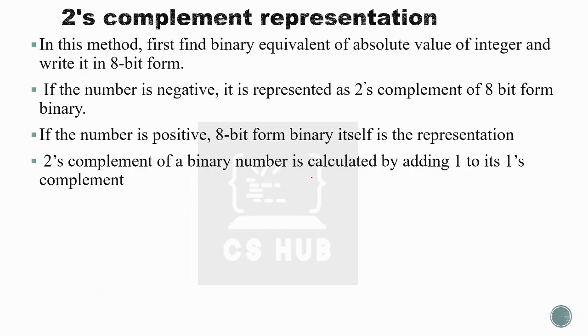So: two's complement equals one's complement plus one. To summarize the formula: two's complement = one's complement + 1.